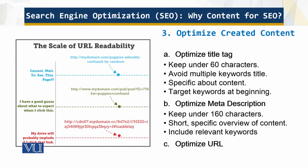Optimize the created content. Optimize the title tag — it should be under 60 characters. Avoid multiple keywords in the title as it becomes confusing. Stay specific and focused. Target the keyword at the beginning of the metadata description, which should be under 160 characters as opposed to 60 characters for the title. Keep your URL short and specific — review and optimize your URL.